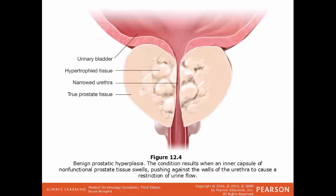In this illustration, we have an example of BPH, benign prostatic hyperplasia. The reason it's called hyperplasia is that you have an overdevelopment of the cells of the prostate gland. As these extra cells are made, the prostate gland ends up squeezing on the urethra. This is why men who have a swollen prostate feel like they have to urinate all the time.